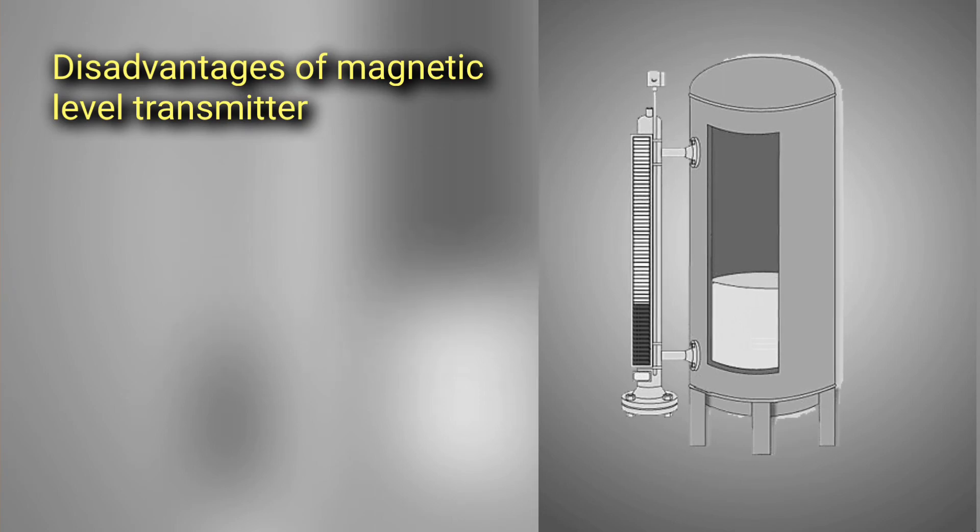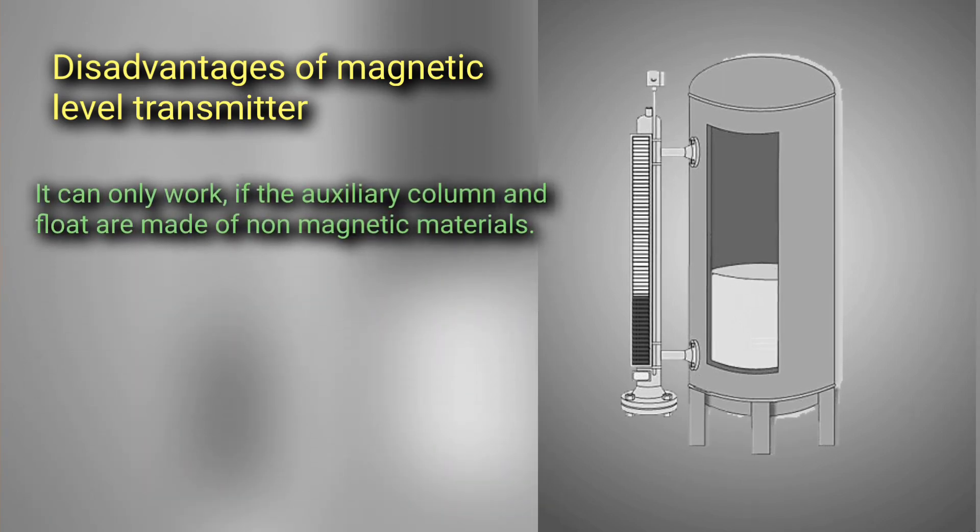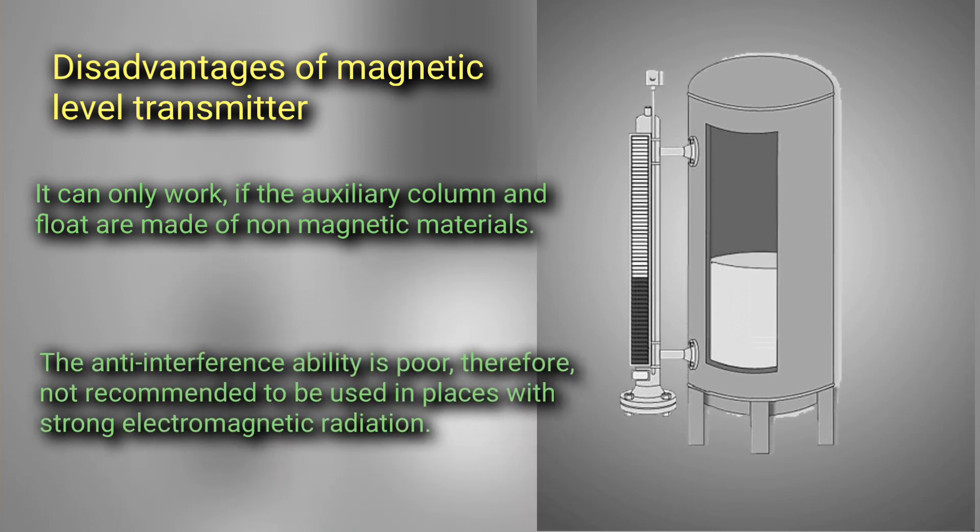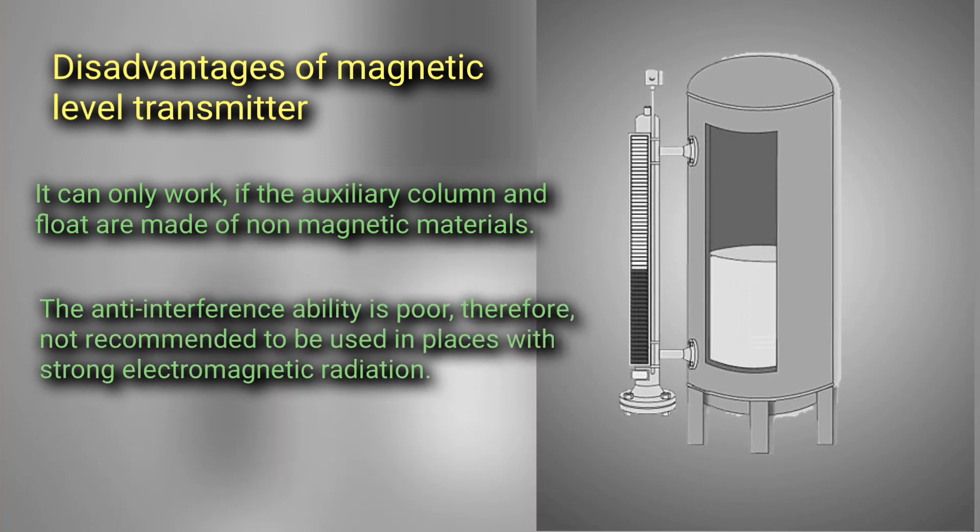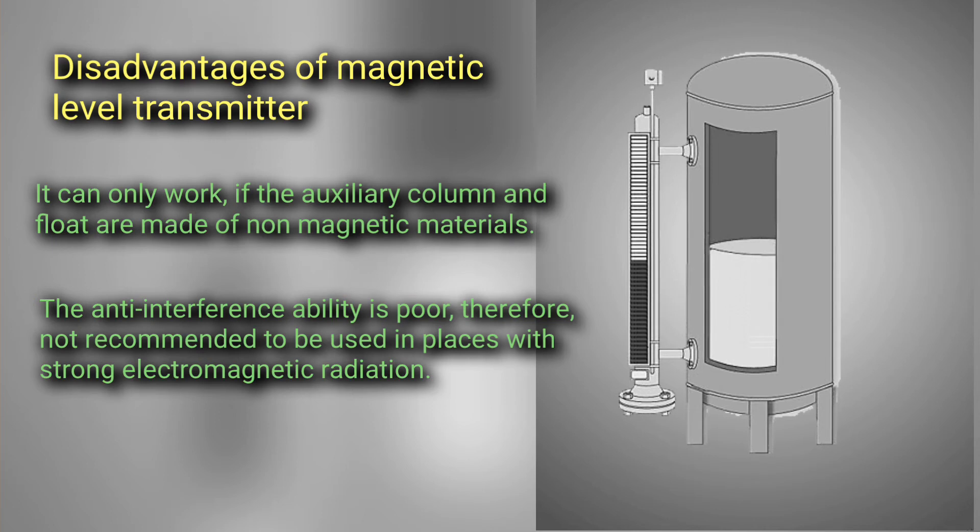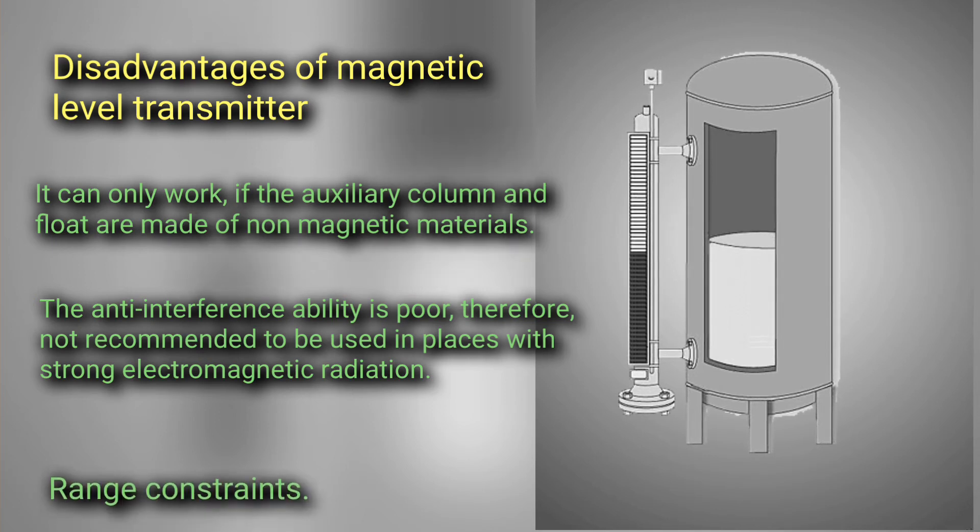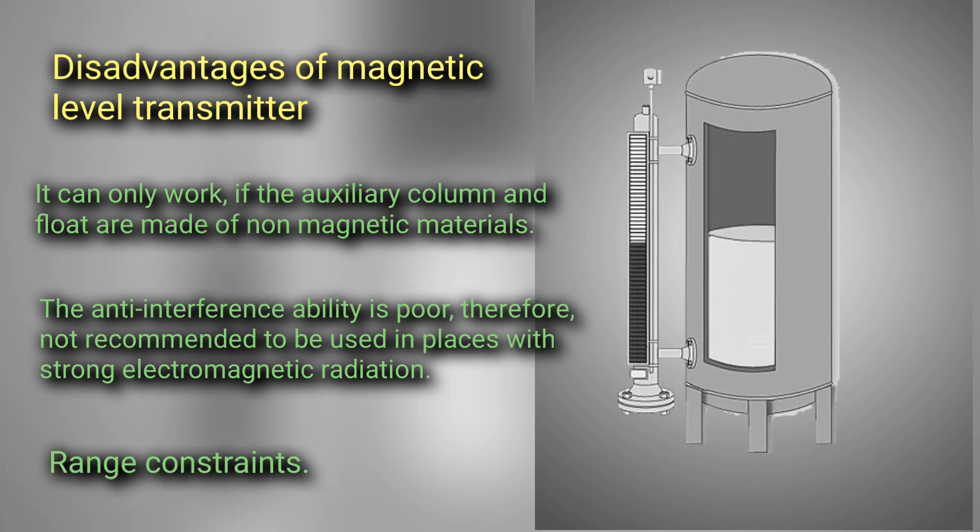Disadvantages of magnetic level transmitter: It can only work if the auxiliary column and floats are made of non-magnetic materials. The anti-interference ability is poor, therefore not recommended to be used in places with strong electromagnetic radiation. Range constraints.